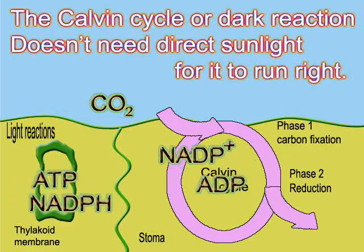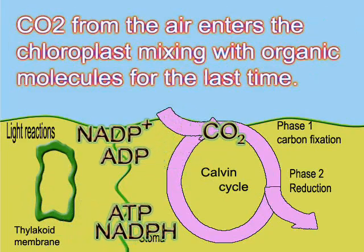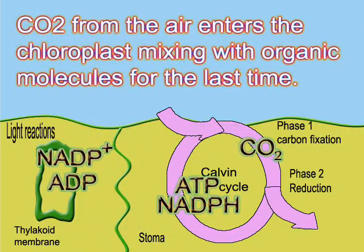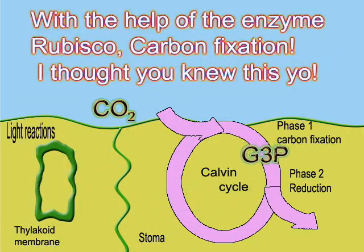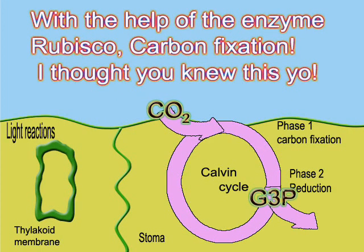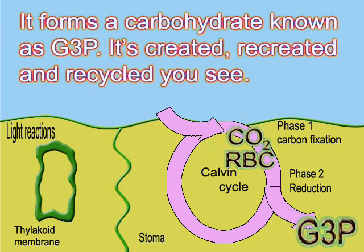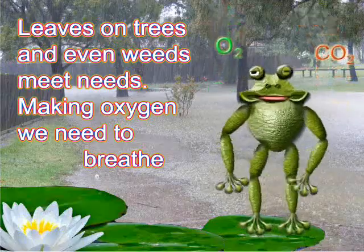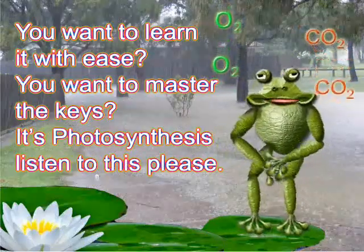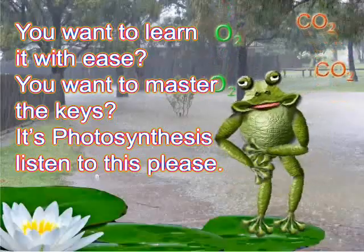The Calvin cycle, or dark reaction, doesn't need direct sunlight for it to run right. CO2 from the air enters the chloroplasts, mixing with organic molecules. With the help of an enzyme, RuBisCO, called the fixation — it forms a carbohydrate known as G3P. It's created, recreated, and recycled, you see. Leaves on trees and even weeds make the oxygen we need to breathe. You want to learn it? You want to master the keys? It's photosynthesis — listen to this, please.